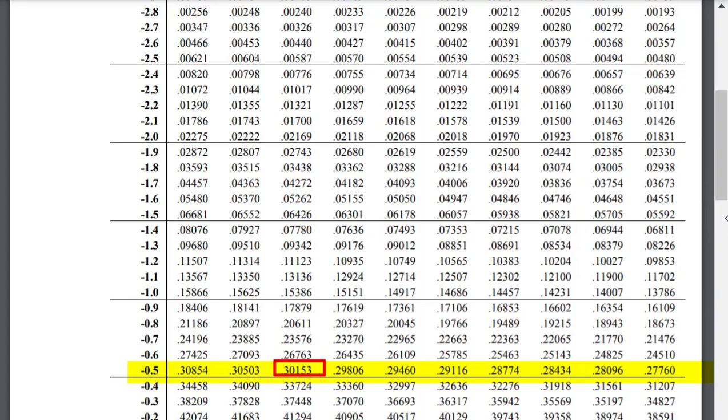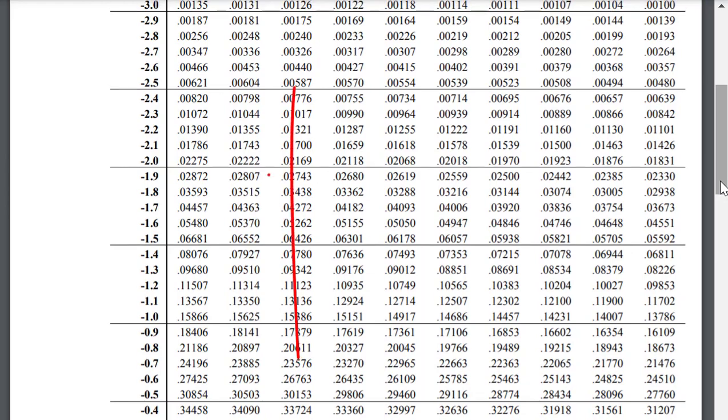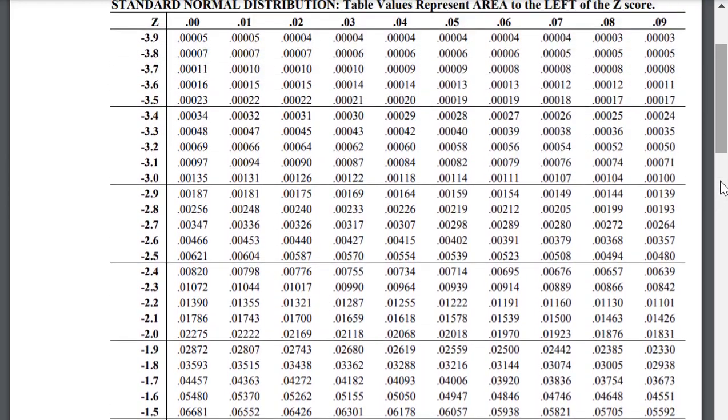It's in the negative 0.5 row. And I'm going to have to scroll back up for the column. It's in the 0.02 column. I have to add those two values together to get my z-score.